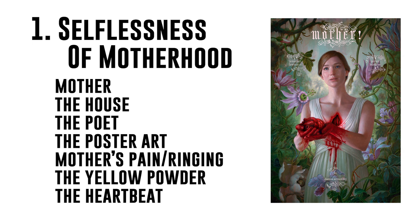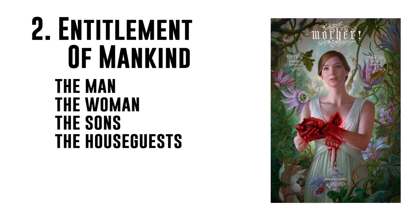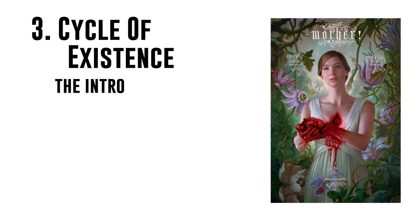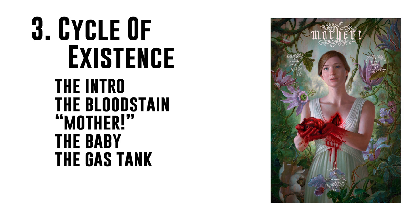Two: entitlement of mankind, where we'll discuss the man, the woman, the sons and the many symbols of the house guests. And three: cycle of existence, where we'll discuss the intro, the bloodstain on the floor, the title style with the exclamation mark, the baby, the gas tank and every single thing to do with the ending. And much more.